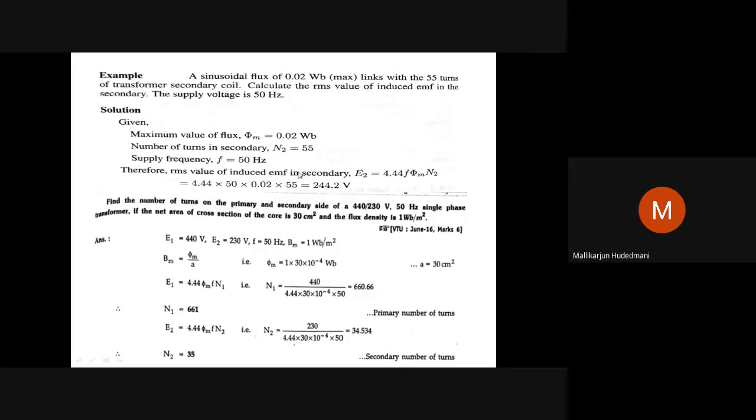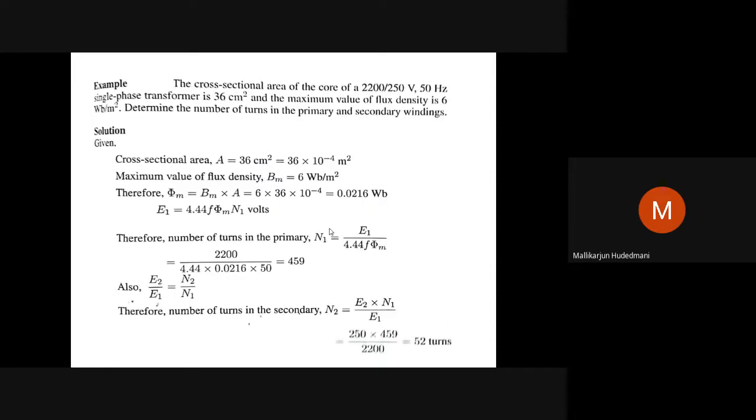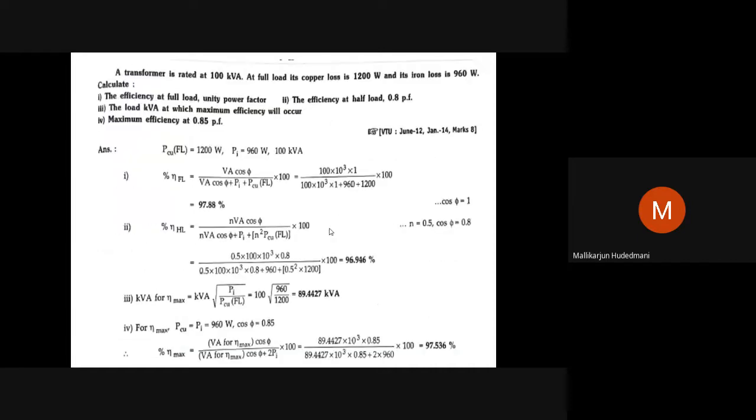Very basic problems: number of turns, voltage induced, flux, ratio. You can see simple problems. Ratio of voltage E2 by E1 equals N2 by N1 equals I1 by I2. Transformation ratio. Calculation of flux, turns. Calculation of efficiency at full load, efficiency at half the full load, and output at max efficiency. Output at different efficiency ratings has been asked. Many variations.